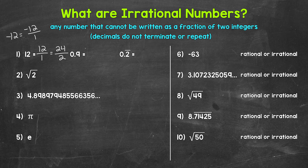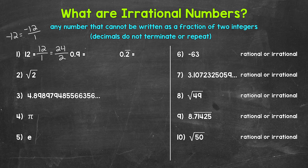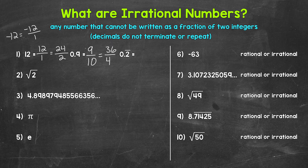Let's move on to 9 tenths. This is a terminating decimal, so we can see that it is rational right away. As far as writing this as a fraction of two integers, we can write this as 9 over 10, or even something like 36 over 40. So 9 tenths is rational.